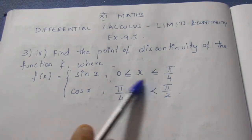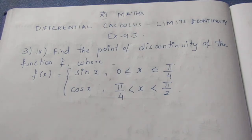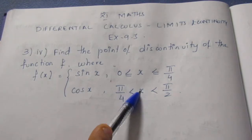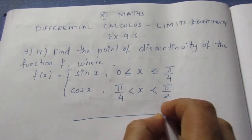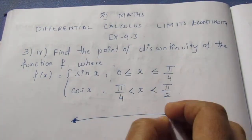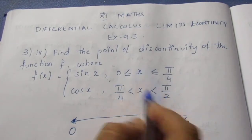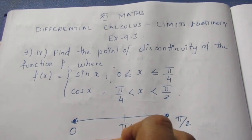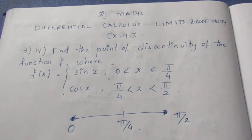If we look at the two pieces of the function, the common point — the boundary angle — is π/4. We can identify π/4 as the critical point where we need to check continuity, since it lies at the junction of both pieces.